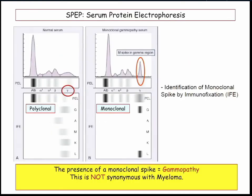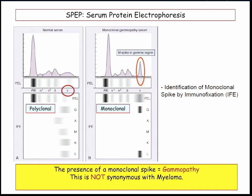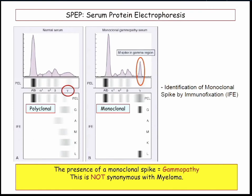Here's a protein electrophoresis. The big spike is always albumin. Far away from the albumin are the globulins — you go down IgG, IgA, IgM, kappa-lambda — a polyclonal representation of the globulin peak.